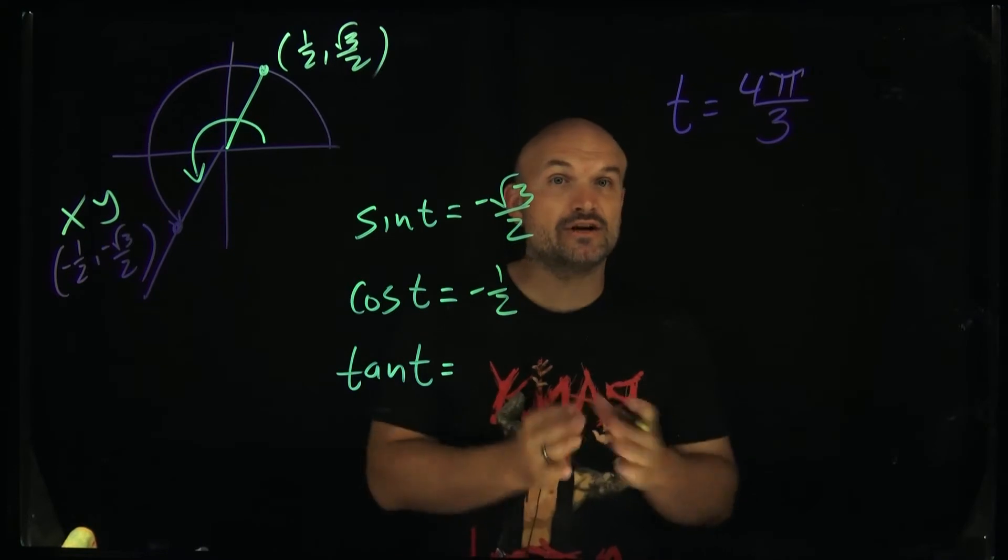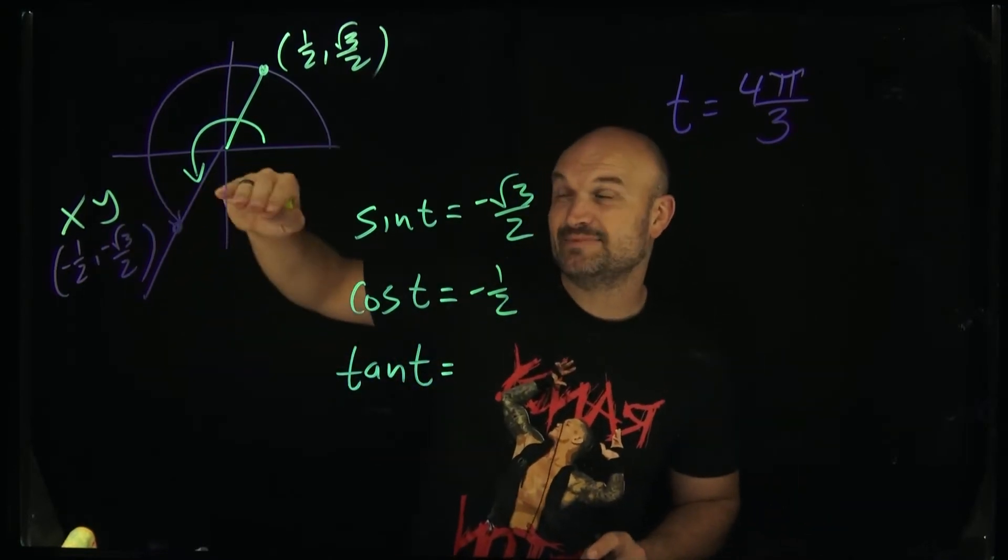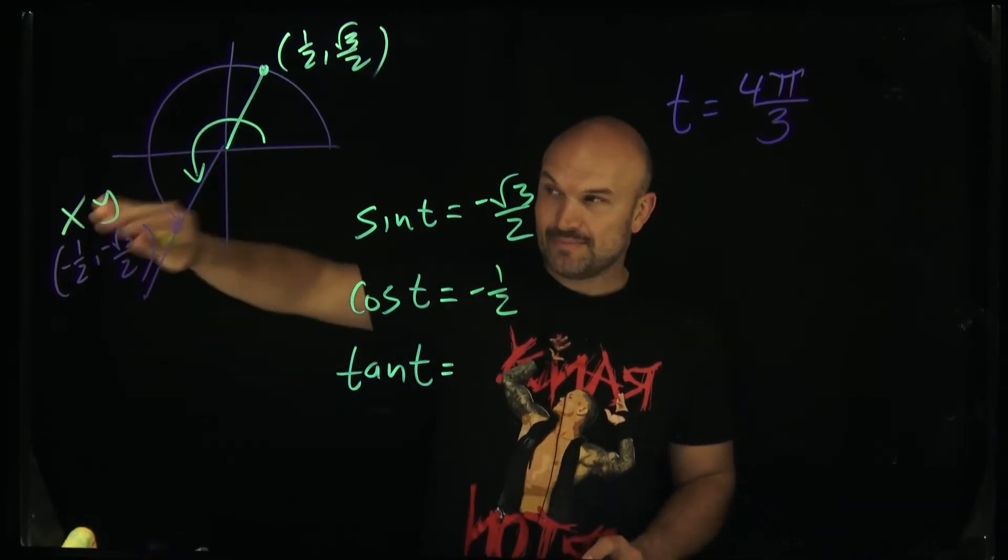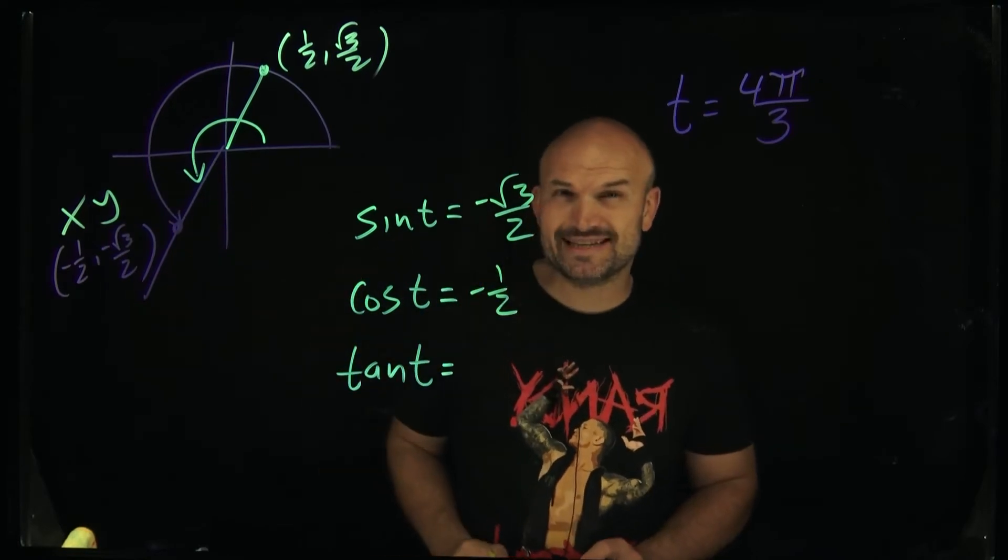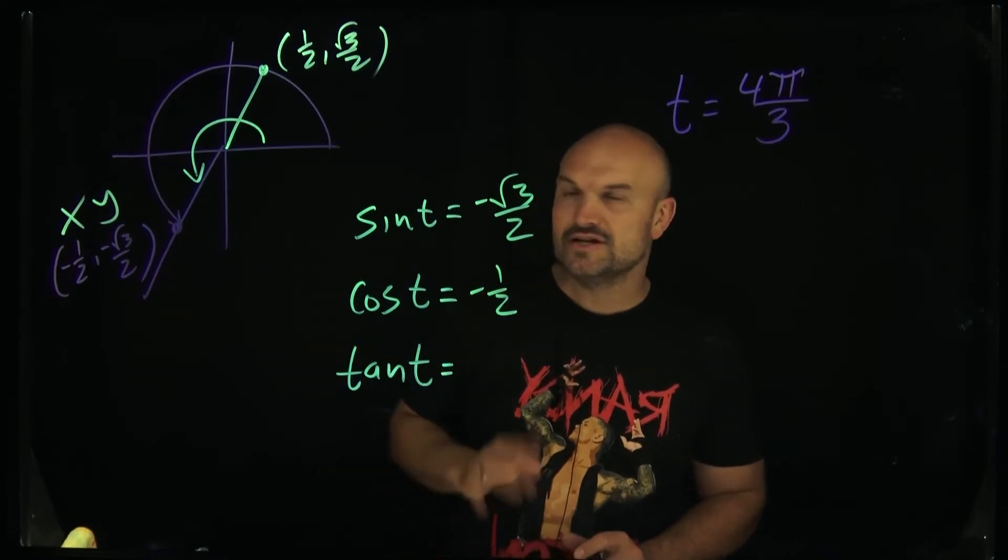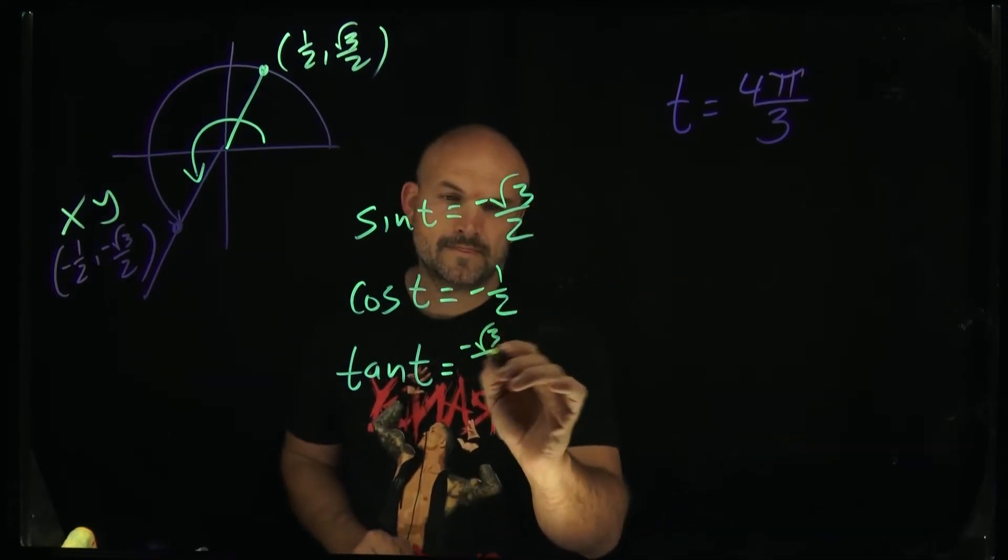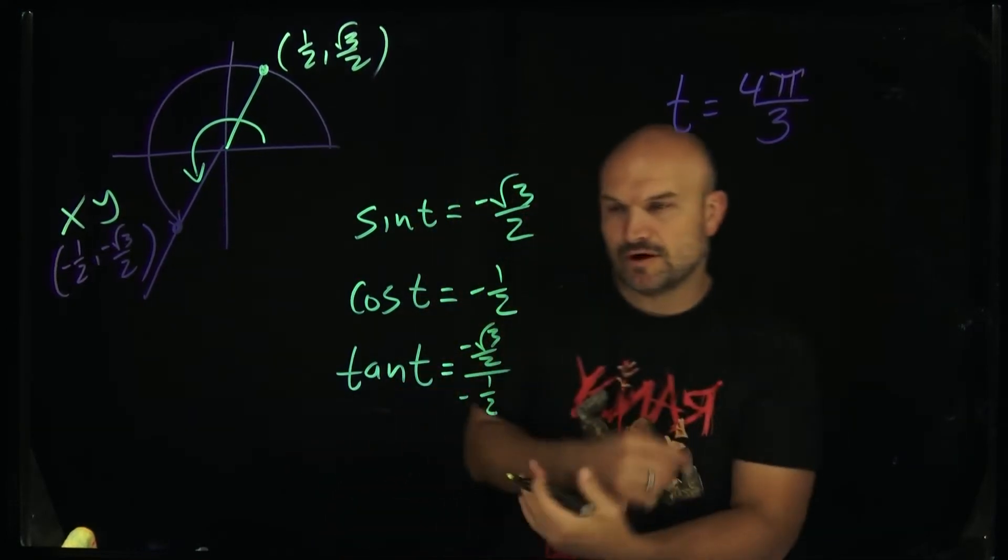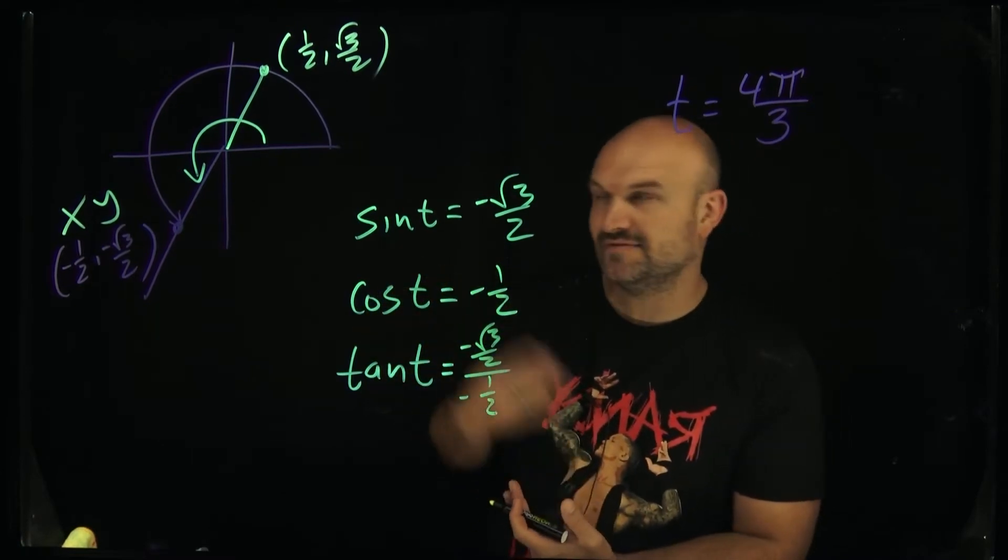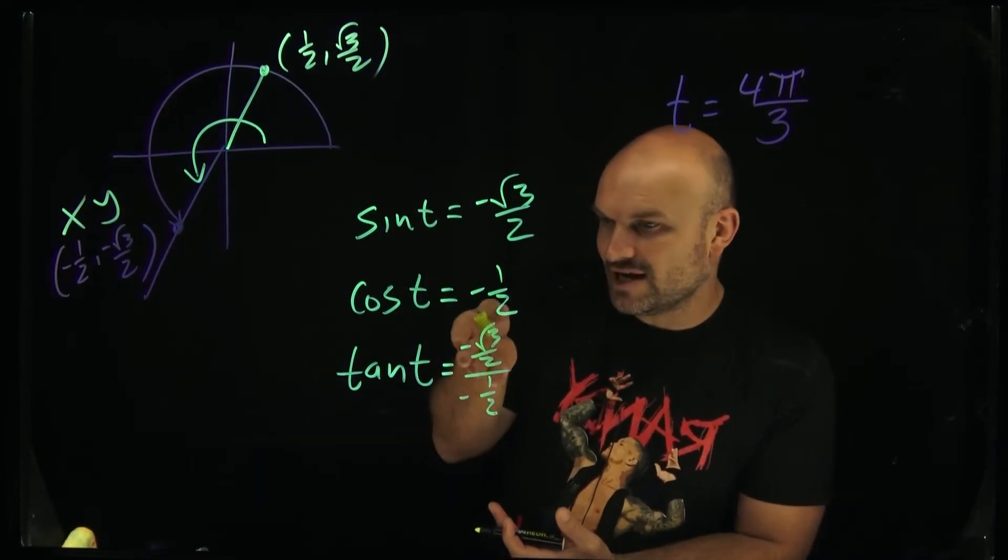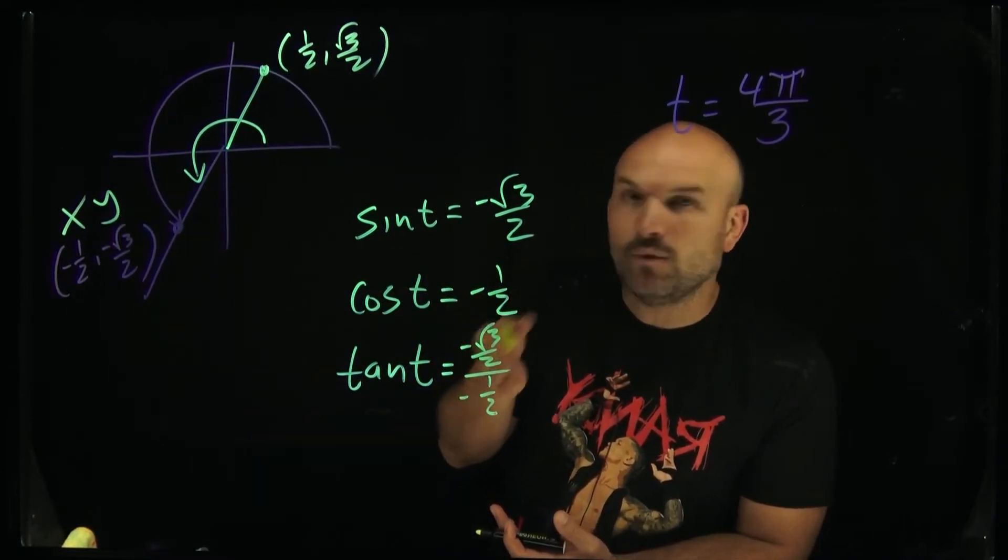And the tangent is going to be represented by the y over x. So you can see in this case that's going to be a negative square root of 3 over 2 divided by a negative 1/2. Now, there's some interesting things that are going to be dividing out in this case, so let's go and write it out so you can see exactly what's going on.